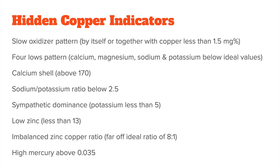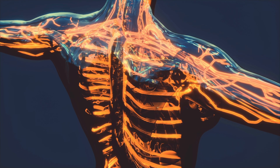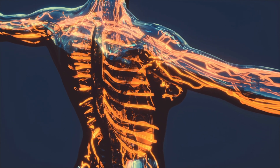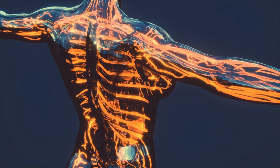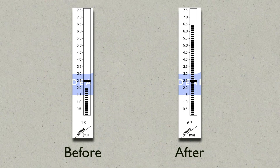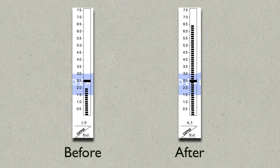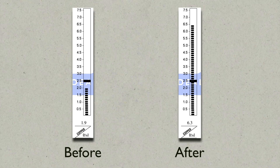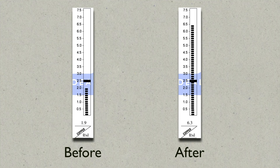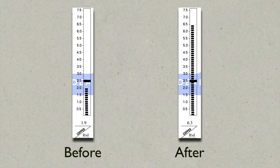Basically, what the labs found was that every time someone had one or more of these markers, chances are very high that the person also has a copper issue. The reason their copper hair level might look normal is because that person's body cannot eliminate the excess copper effectively, so the reading stays within the normal range. Once you improve that person's nutrient levels and their energy, the copper will start to be dumped — and often on a retest, the copper level spikes.